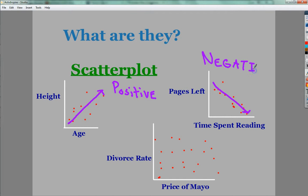Just because one goes up and the other goes down. They both go up, it's positive. Now, in terms of divorce rate and the price of mayonnaise, you see there's dots everywhere. Really, there's no correlation at all. Because divorce rate and price of mayonnaise aren't related. I hope not. So there you go.